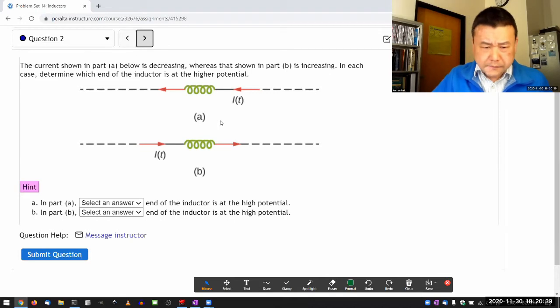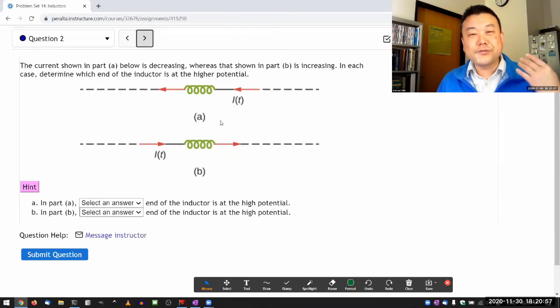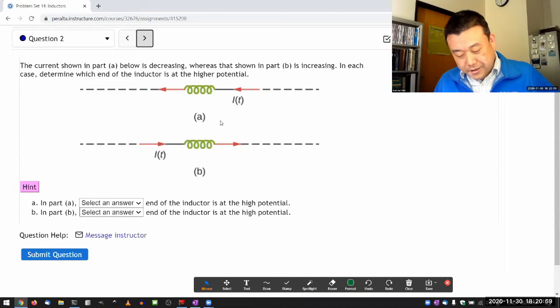You have already seen Lenz's law with electromagnetic induction in context where you're dealing with actual magnetic fields. So you apply Lenz's law in a way where the magnetic field due to induced current, due to induced voltage, it opposes the change, so you've seen all that.